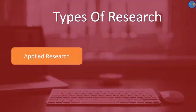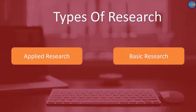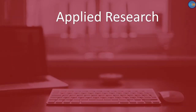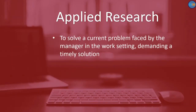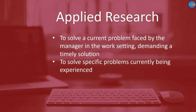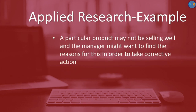Research is of two types: applied research and basic research. Applied research is to solve a current problem faced by the manager in the work setting demanding a timely solution. Research done with the intention of applying the results of the findings to solve specific problems currently being experienced in an organization is called applied research. For example, a particular product may not be selling well and the manager might want to find the reasons for this in order to take corrective action — such research is called applied research.